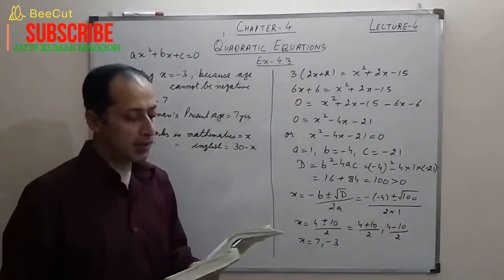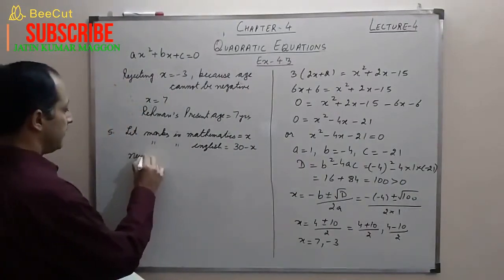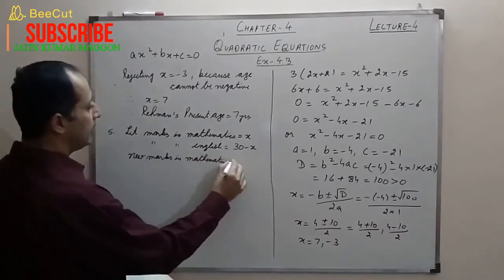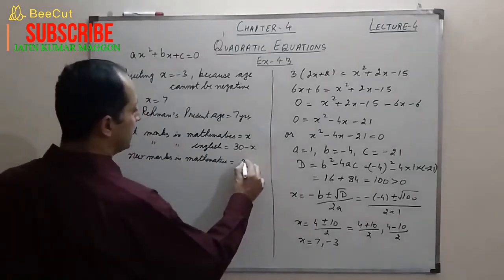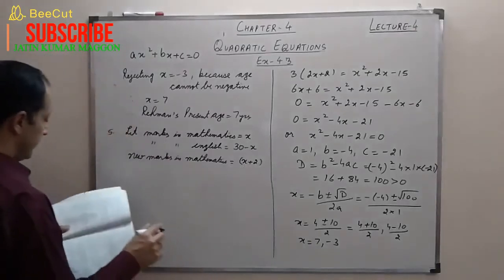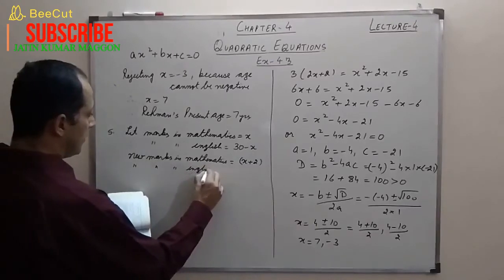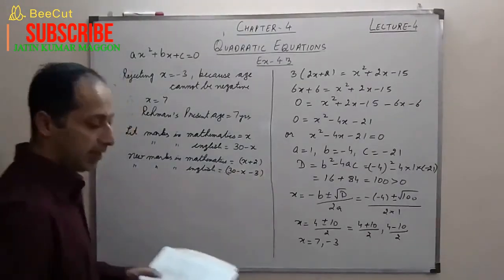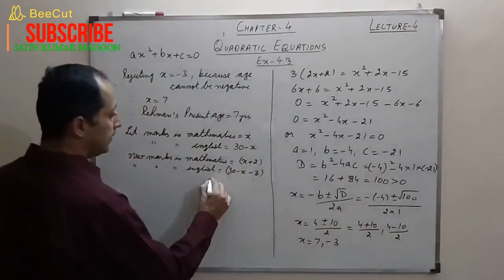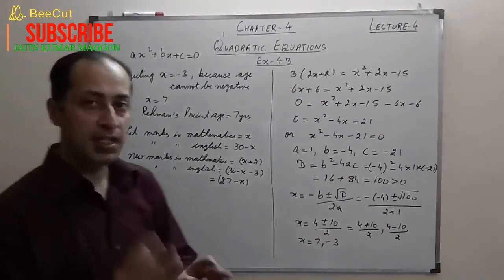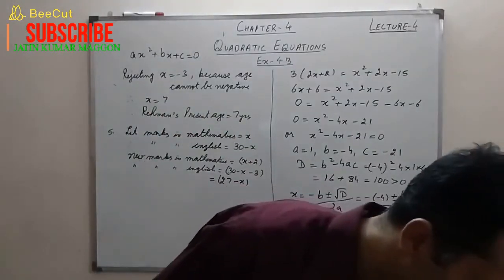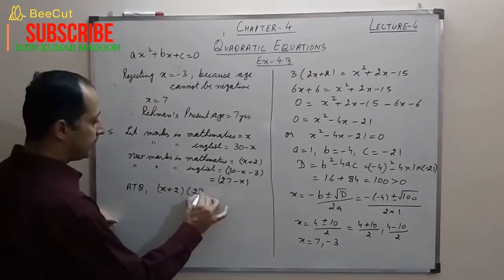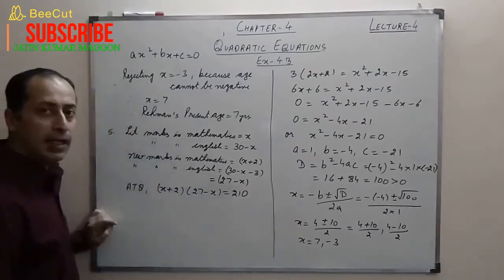If she had got 2 more marks in mathematics, new marks in mathematics = x + 2. And 3 less in English, so new marks in English = (30−x) − 3 = 27 − x. The product of the new marks is given as 210. So according to the question: (x+2)(27−x) = 210.